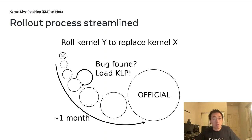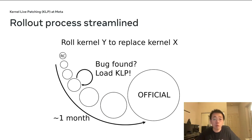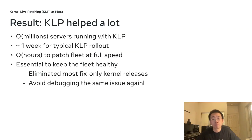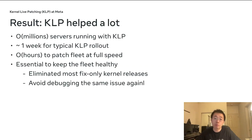When rolling a new kernel, we always start small with a release candidate and gradually increase deployment. Before KLP, if we got a bug, we had to go back to the first release candidate. With KLP, if there's a bug, we load the KLP and move on — giving us a much more predictable kernel release cadence. The results have been significant: we now have millions of servers running with KLP. Typically it takes a week to roll out a new KLP, and in extreme cases we can patch the whole fleet in hours. KLP is essential to keep the fleet healthy — we've eliminated most fix-only kernel releases and don't have to debug the same issues again.